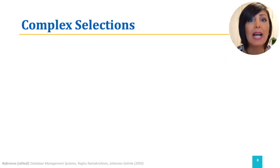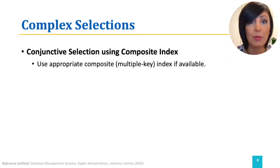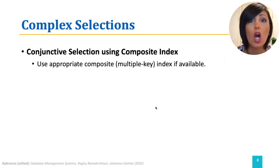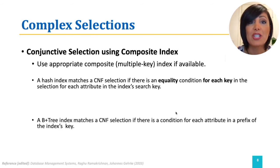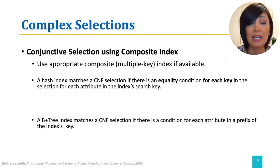If we have a complex selection and we have the appropriate index with a matching composite search key, we can use it just as in simple selection. Exact matches on equality conditions are possible using both hash and tree index matches. A hash index matches a CNF selection if there is an equality condition for each attribute in the index's search key. A B+ tree index matches a CNF if there is a condition for each attribute in the prefix of the index's keys.